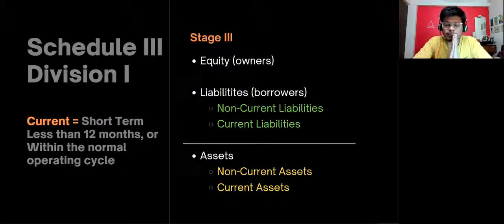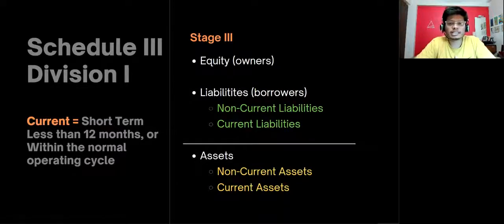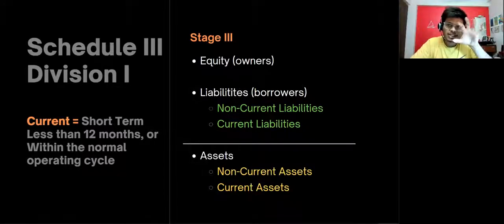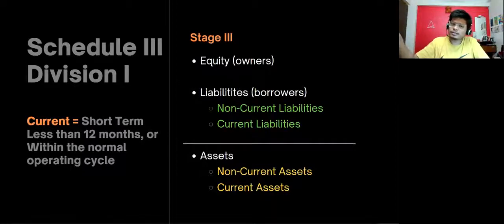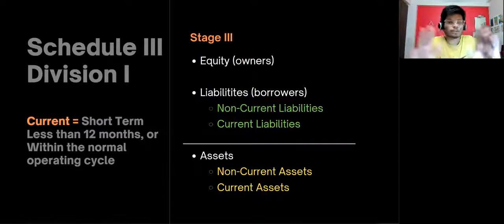The 12-month rule isn't fixed everywhere. The accounting standard says an item is current if it's within the normal operating cycle of the business. For example, if my business operates on a six-month cycle, then payments due within six months are short-term. For simplicity though, assume any payments or receipts within 12 months are current. That is stage three.